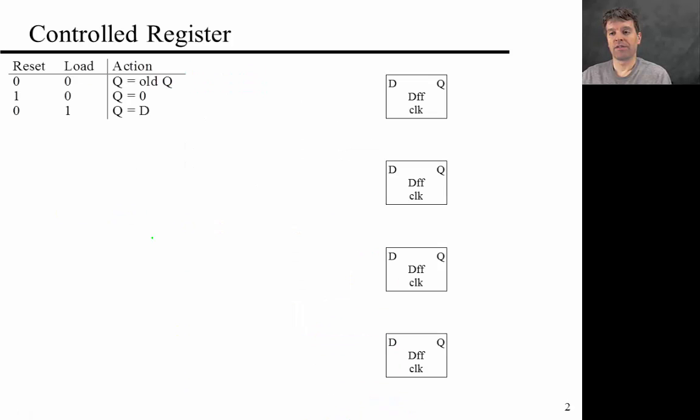So now a slightly more interesting device is the controlled register, and what the controlled register is supposed to do is shown in the top left in this truth table. So it's something where you have inputs that are called reset and load, and if both of them are set to zero, then the register is just holding information.